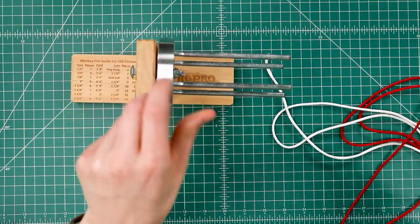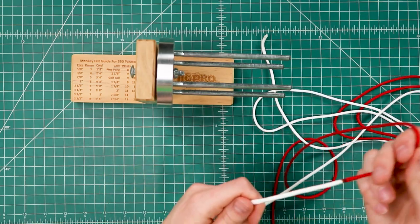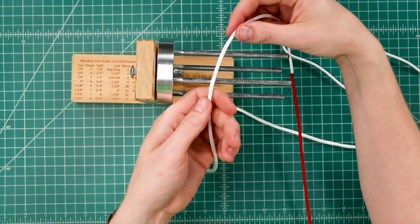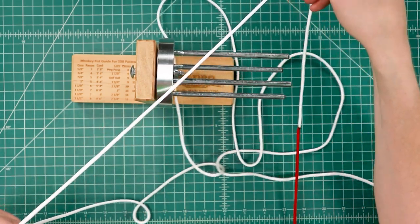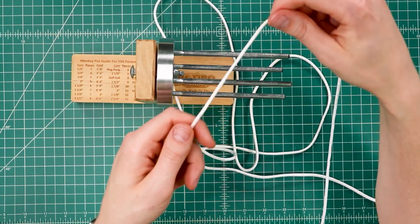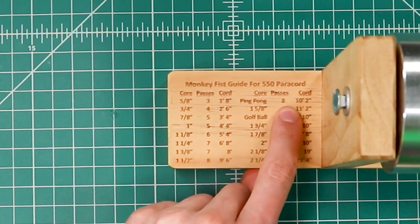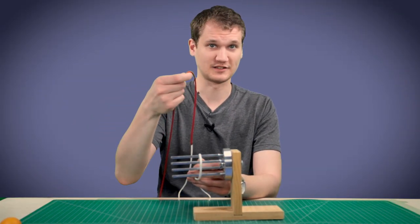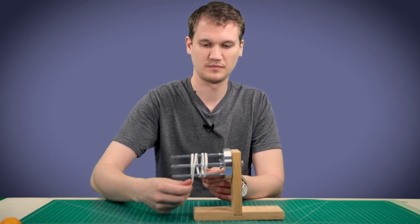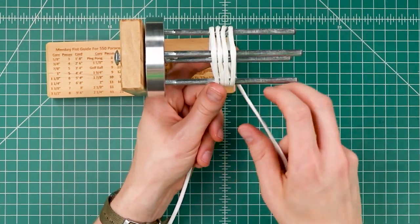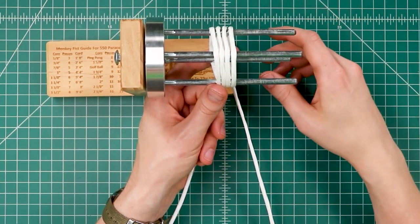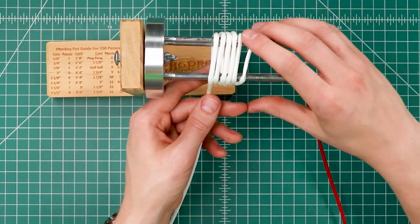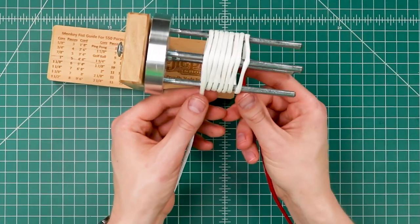Then we're going to take out our monkey fist jig and start with our white end of the cord. Normally we'd start on an end of a paracord, but we want to get the first pass in our white cord. So I want enough to wrap our eight wraps. With a ping pong ball, we've got eight passes around. So I'm going to start with my white, the side that connects to my red cord. We'll go eight full wraps around. You might want to turn your cord so that it lays flat.